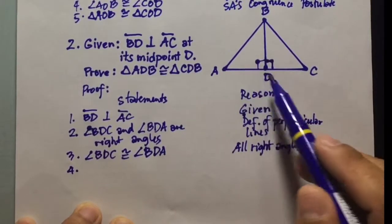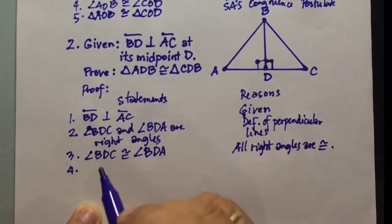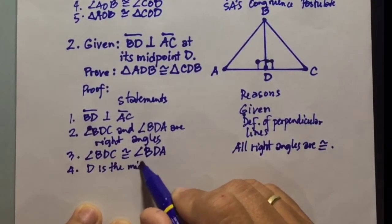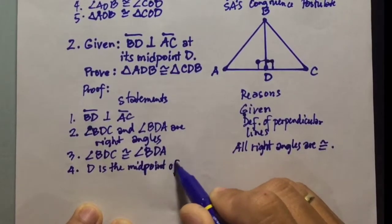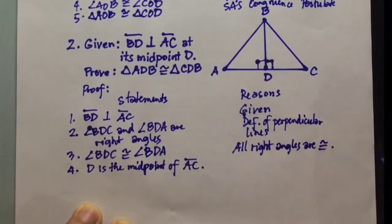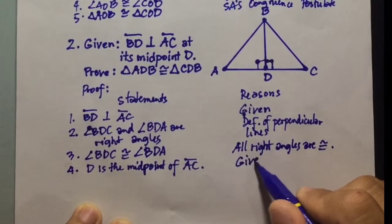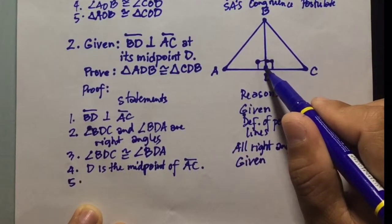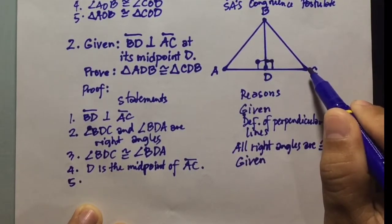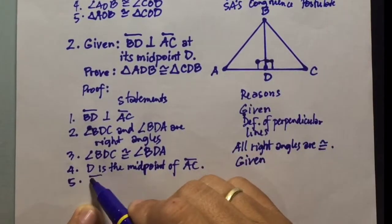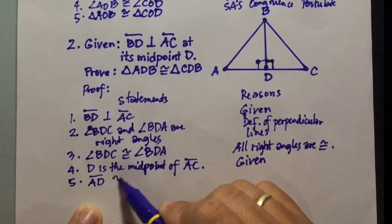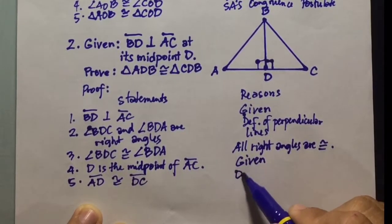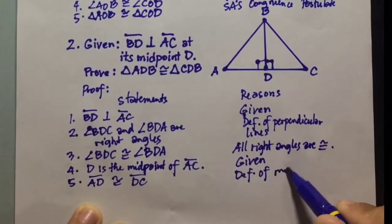The second given is that D is the midpoint of line segment AC, and the reason is 'given.' Since D is the midpoint, this point divides line segment AC into two congruent parts. So we can say that line segment AD is congruent to line segment DC, and the reason is the definition of midpoint.